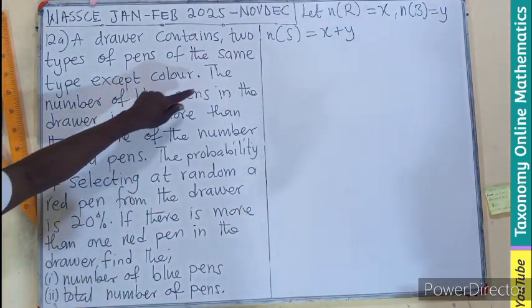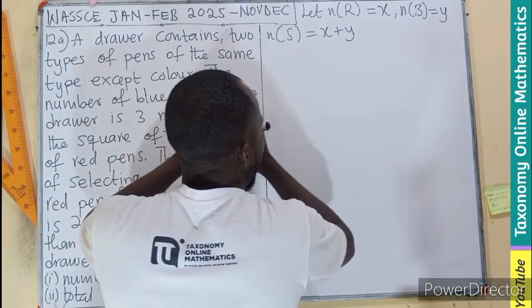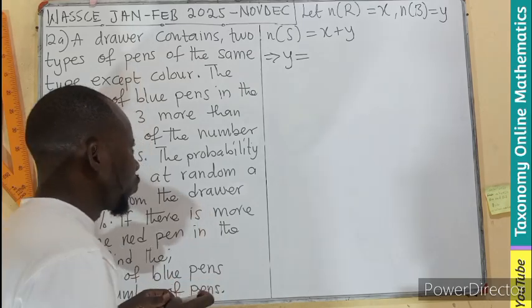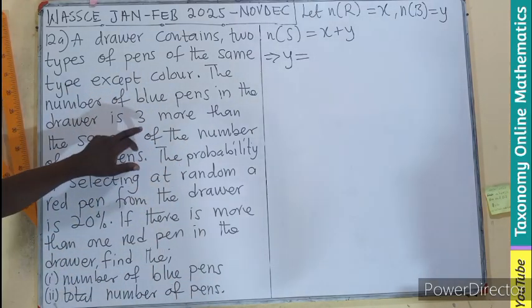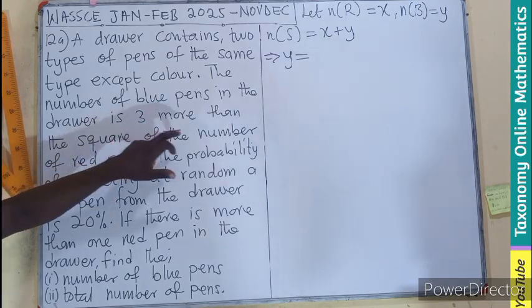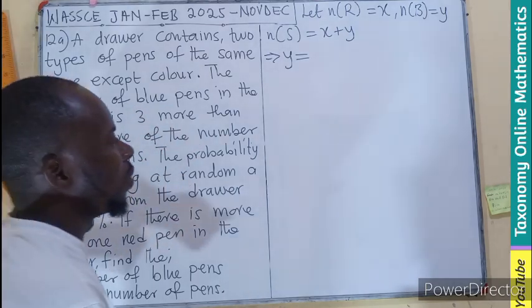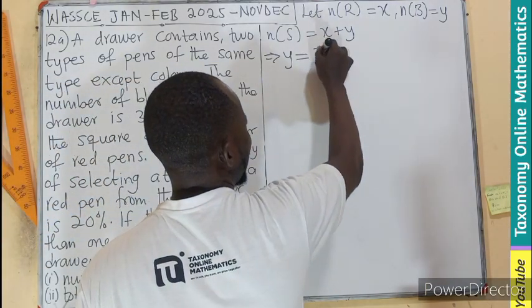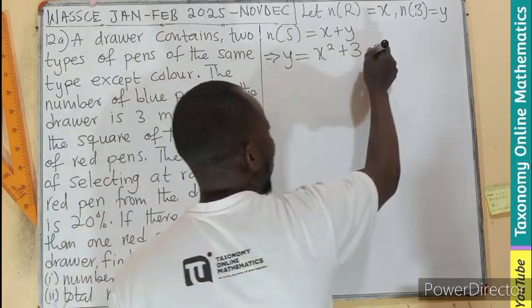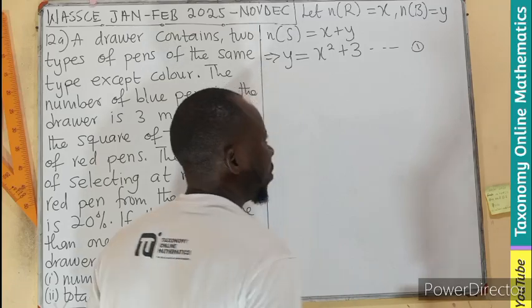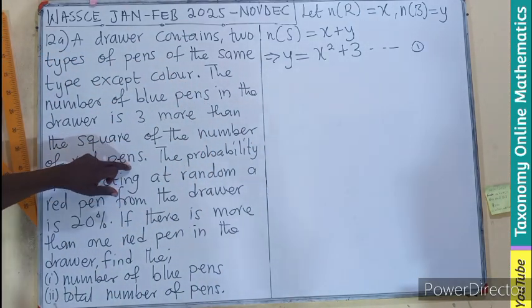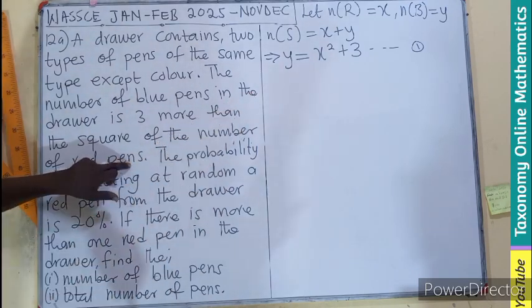But coming to the question, the number of blue, which is Y. This implies that Y will be equal to, the number of blue is equal to three more, means three plus the square of the number of red. So it means three more, the square of this plus three. X is unknown, Y is unknown. So let's label that as equation one. We are still picking from the question and we are now at this point. So at this point, this is all we can get.